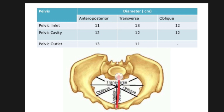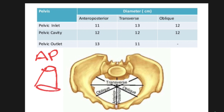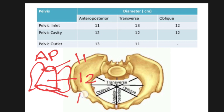For the anterior-posterior diameter, before learning this you should know the landmarks. The anterior-posterior diameter attaches two parts: the sacral promontory and the inner corner or border of the symphysis pubis. This diameter has inlet, cavity, and outlet measurements. The inlet is 11 centimeters, the cavity is 12 centimeters, and the outlet is 13 centimeters.